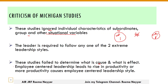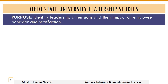Another criticism is about cause and effect. Did the study tell us which is the cause and which is the effect? No. Did the leader adopting employee-centered leadership cause productivity to increase, or did increased productivity lead the leader to adopt employee-centered leadership? No cause and effect relationship was established. This is also a criticism of Michigan Studies.